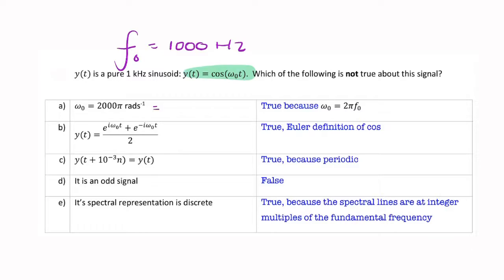omega naught is 2 pi times the frequency in hertz. So that's the frequency in radians per second, that's the frequency in hertz, and the ratio is 2 pi.